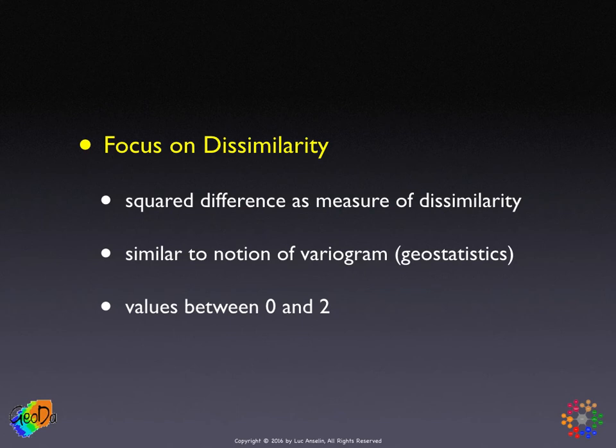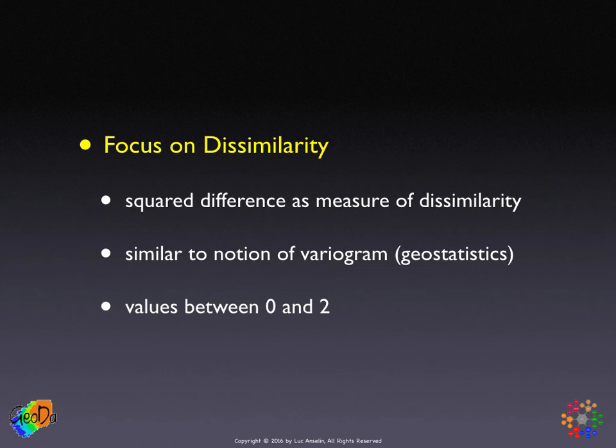The value of Geary's C is very unlike a correlation statistic. It goes between zero and two, and the mean is one. Values less than one imply positive spatial autocorrelation; values larger than one imply negative spatial autocorrelation. This makes sense if you think of it as a measure of dissimilarity — the less dissimilar, the more similar, the more positive autocorrelation. So a small value of the statistic means more alike, and a larger value means more dissimilar.